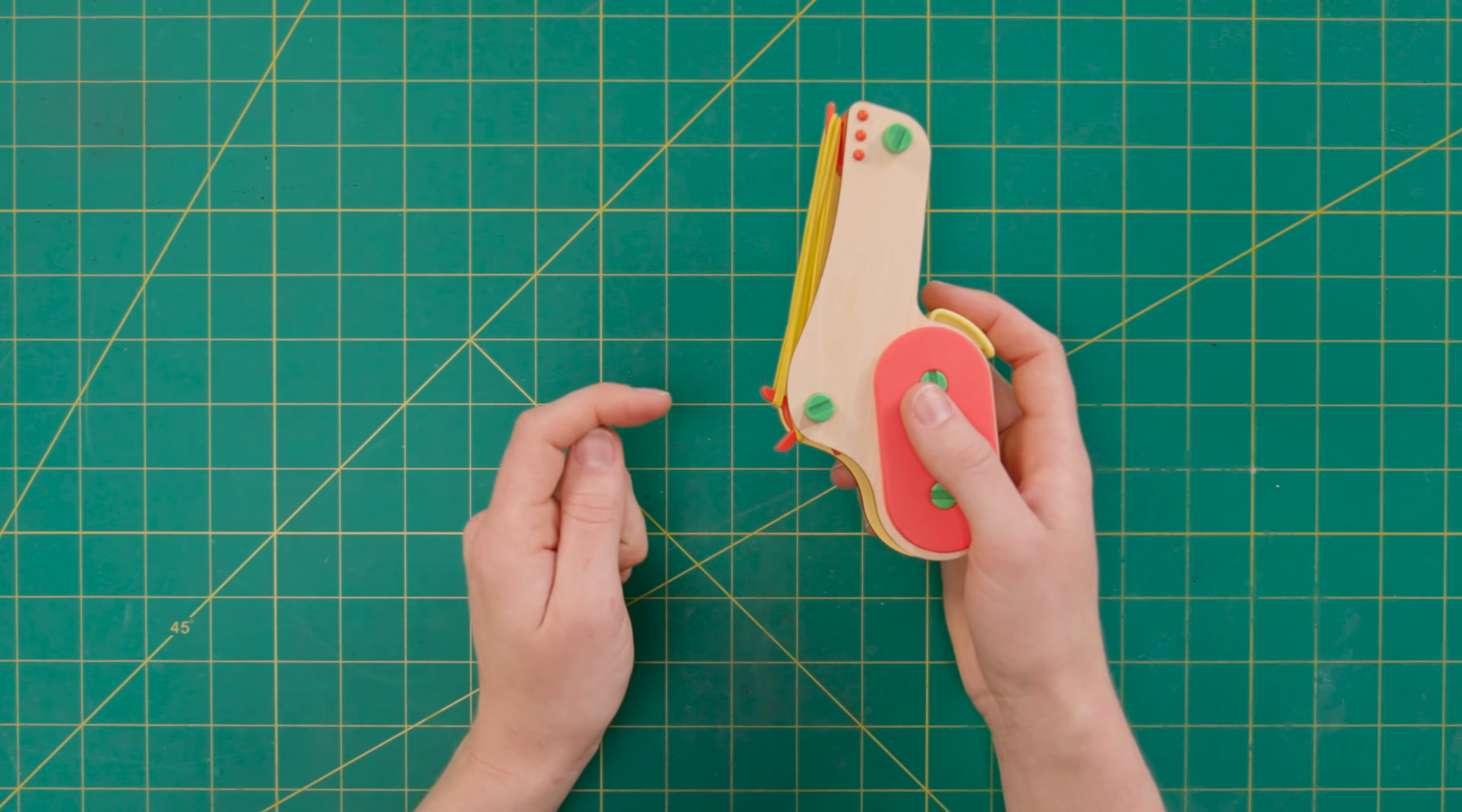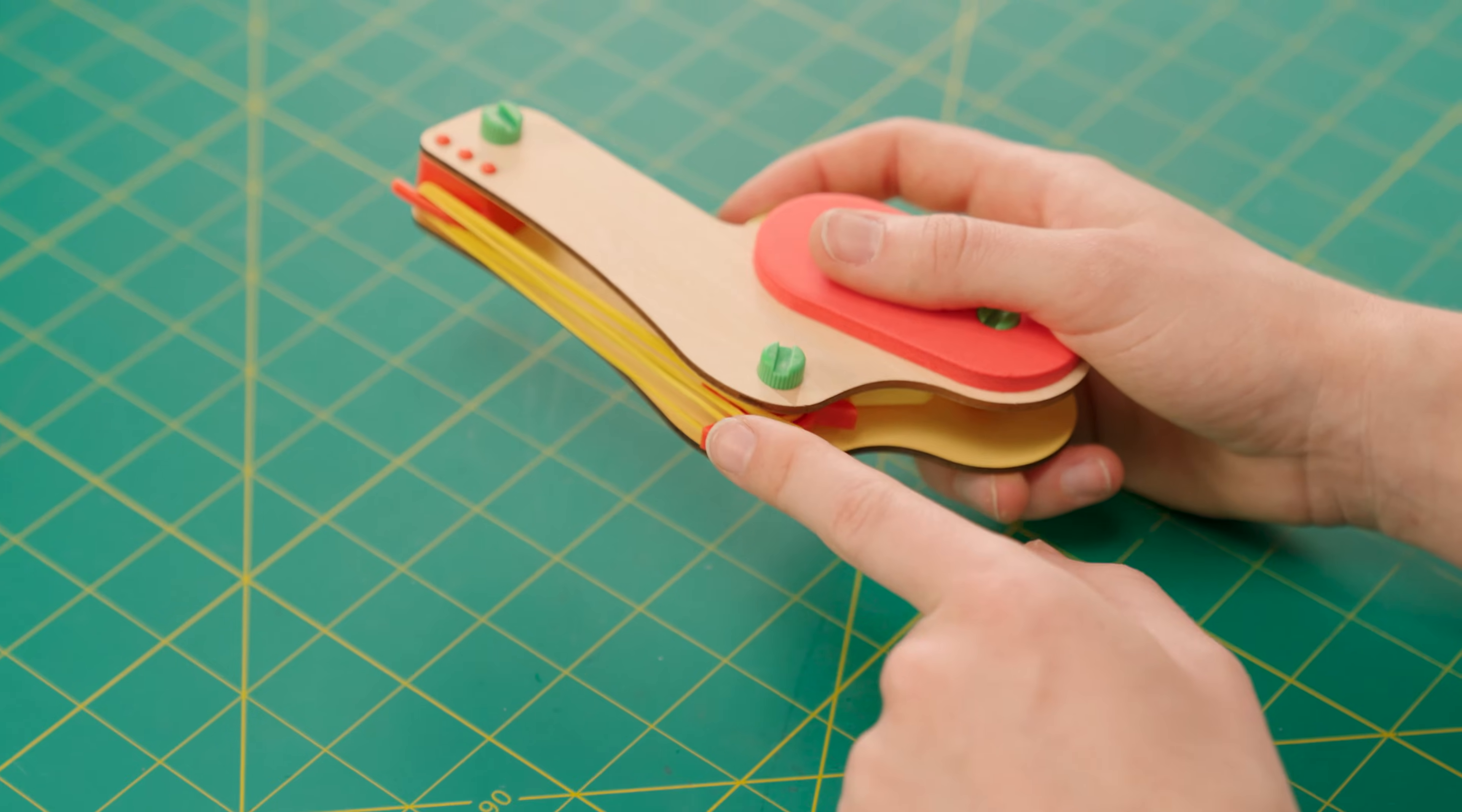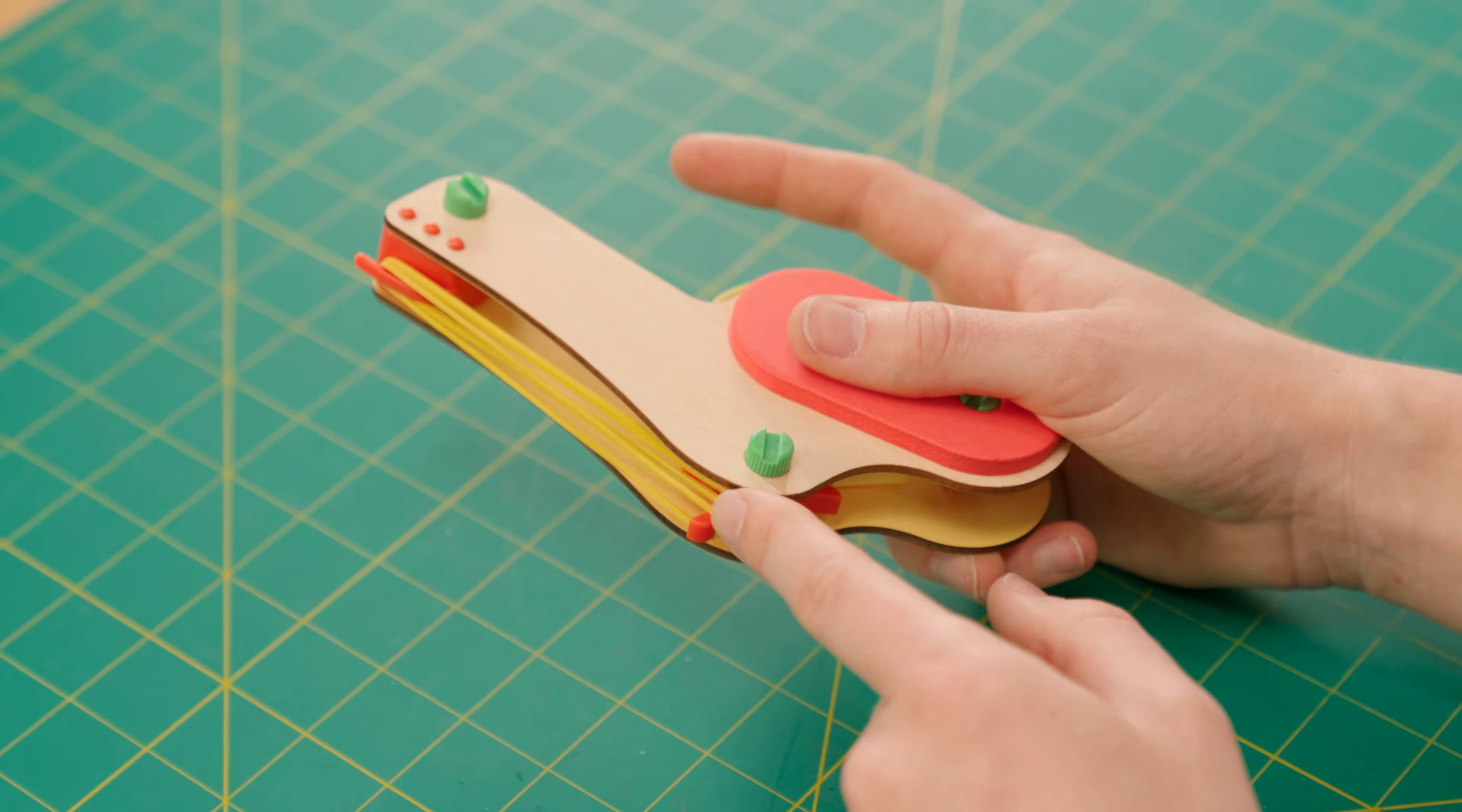All right, now time for some troubleshooting. If you press the trigger and too many rubber bands launch at once, make sure you only have one rubber band loaded per peg and that you press the trigger really quickly.